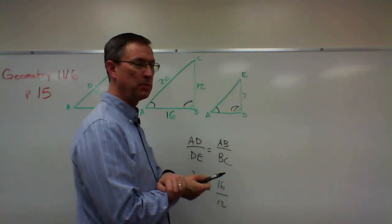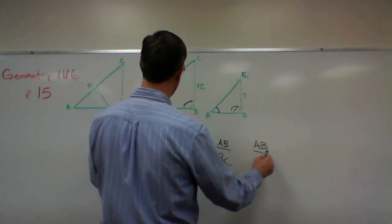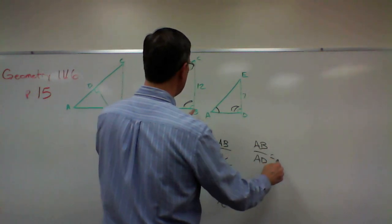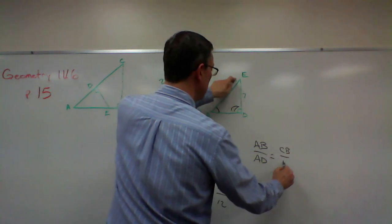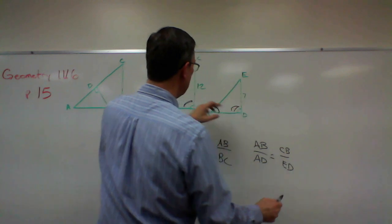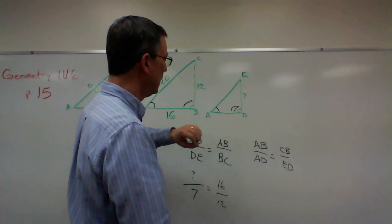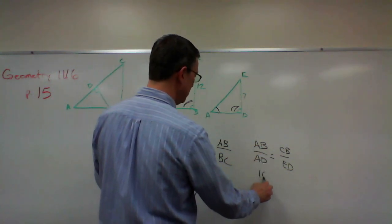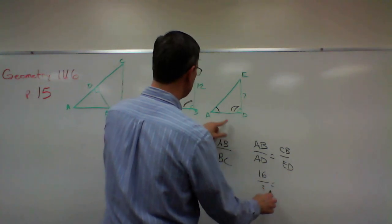Maybe I'll say AB is to AD as CB is to ED. I'm going from this triangle to this triangle, this to this. Let's see if that works. AB is 16, AD is the unknown, equals CB which is 12 over 7.